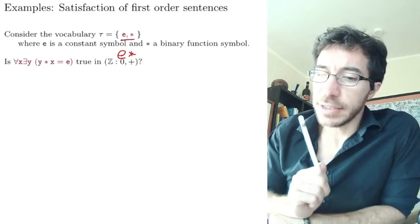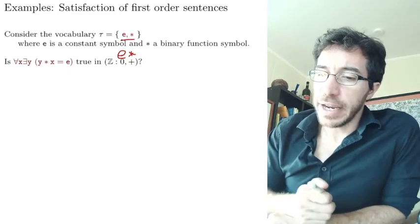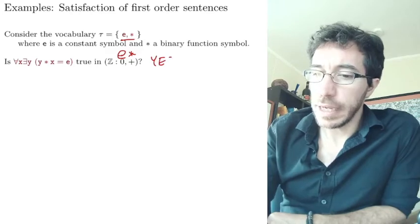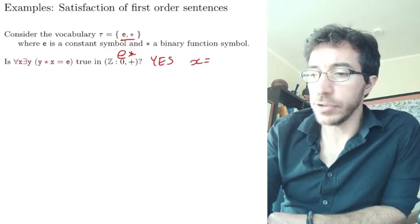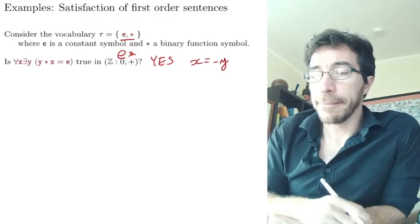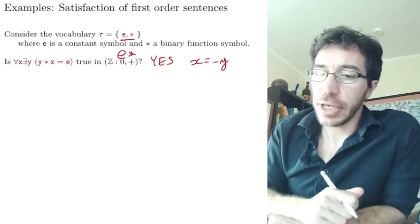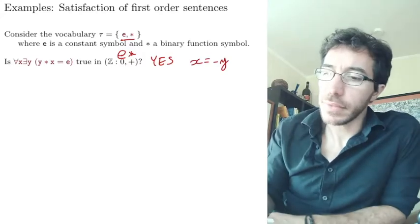So if those are e and star, is it true that for every x there exists a y such that y star x equals e? Yes, the answer is yes. And this x, what is this x? x is essentially minus y, right? The opposite. That's the one that if you add it to x, you get back zero. So yes.